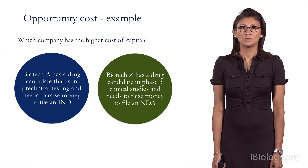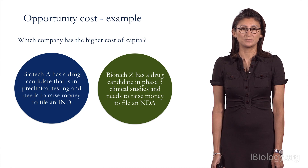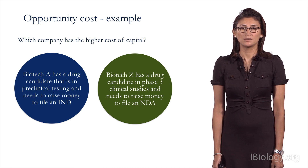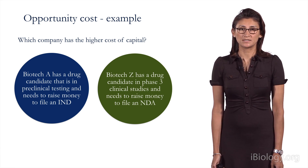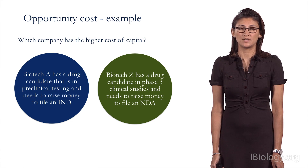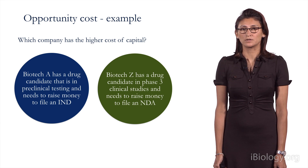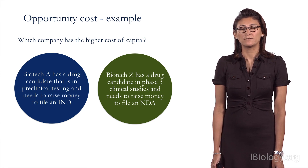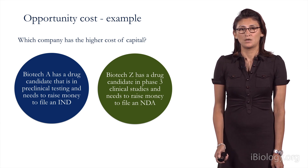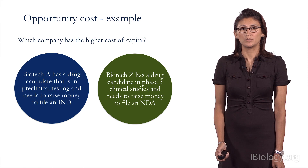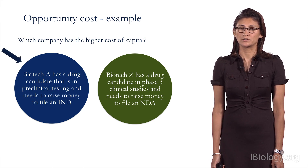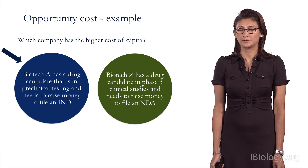In this example, which company would have the higher cost of capital? Biotech A has a drug candidate that is in preclinical testing and needs to raise money to file an IND. Biotech Z has a drug candidate in a Phase III clinical study and needs to raise money to file an NDA. In this example, Biotech A has the higher cost of capital — its drug is in earlier stages and it's riskier.